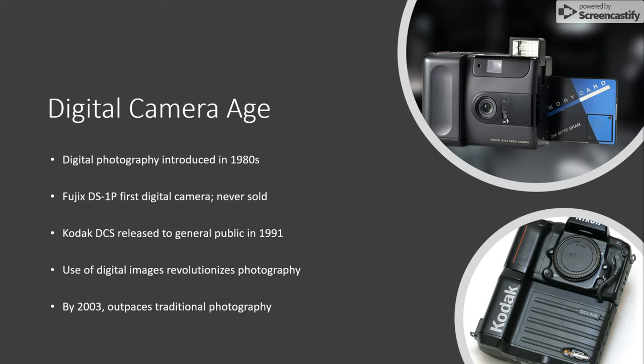It wasn't until the 1980s, however, that one of the greatest leaps in photographic technology unfolded: the digital camera. The world's first digital camera, the Fuji DS-1P developed by Fujifilm in 1988, was never formally sold, but its predecessor, the Kodak DCS, was released to the general public in 1991, only a few years later. Since those early days, digital photography has only grown, relegating the old styles of image capture to extinction or niche hobbyists. This powerful method of photography has outpaced and outsold film cameras since 2003, and only grows more sophisticated each year.